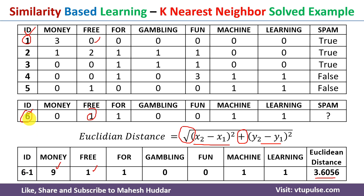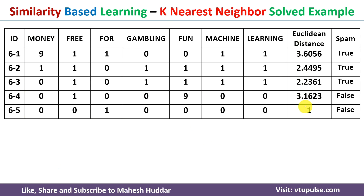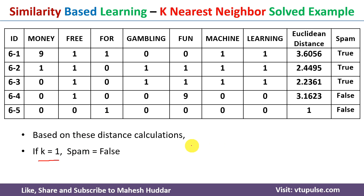Similarly, we calculate the Euclidean distance from example 6 to examples 2, 3, 4, and 5. Once all distances are computed, we find the nearest neighbors. With k=1, we select the neighbor with the minimum distance — that is document 5, with a distance of 1. Since document 5 is labeled as non-spam (false), the new example is classified as non-spam.